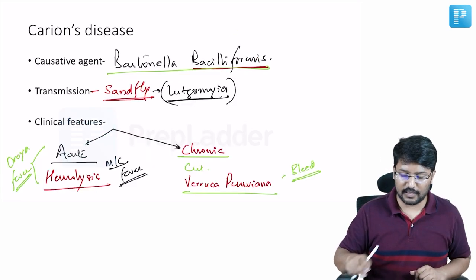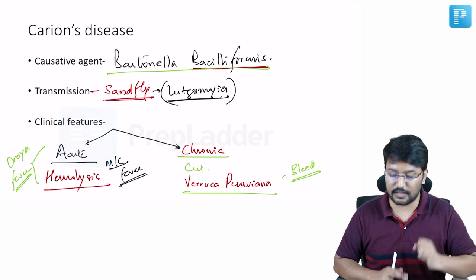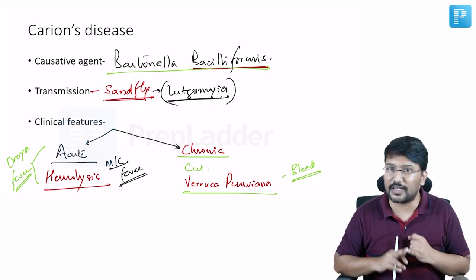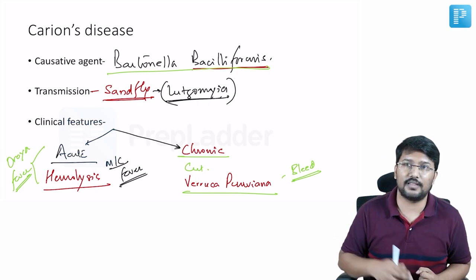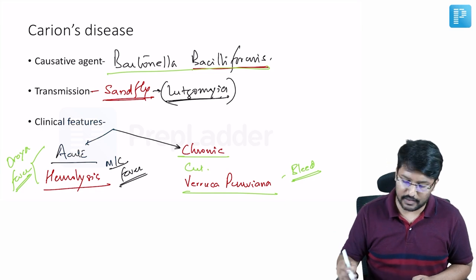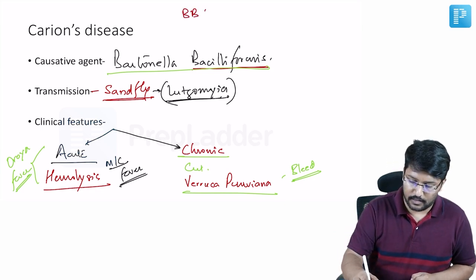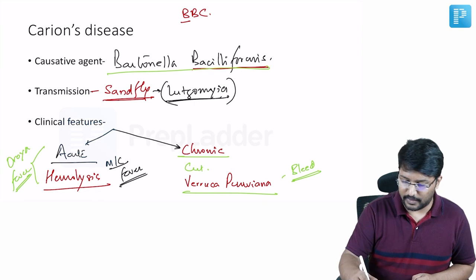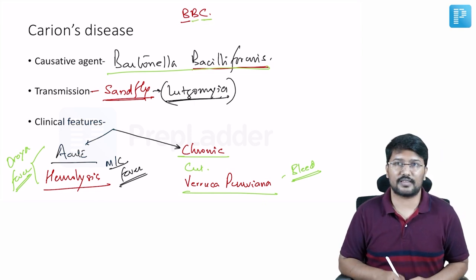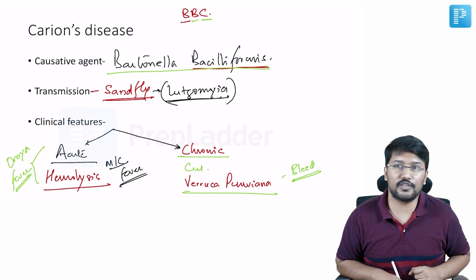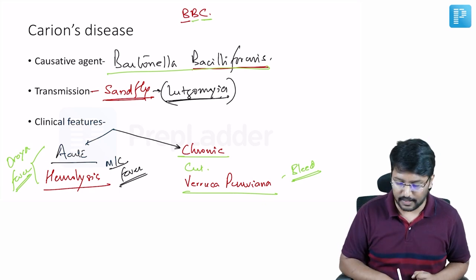So to sum it up three important points. The causative agent is Bartonella basilliformis. So remember that please don't get confused with other cases. You can simply remember with the mnemonic BBC where Bartonella basilliformis causes Carion's disease BBC. First point the transmission is through the sandfly.